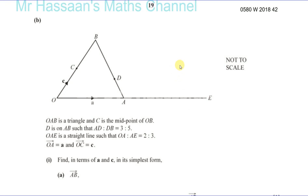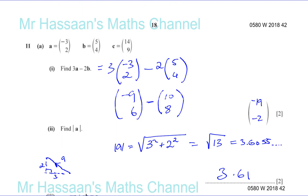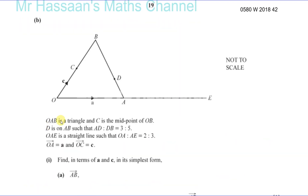Now for question 11, part B, from the October/November 2018 paper 4, variant 2, on vectors.